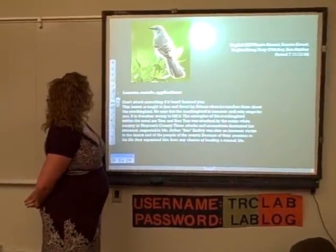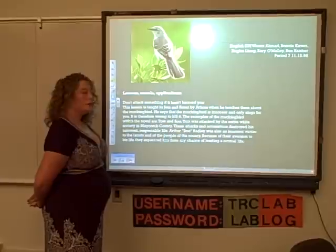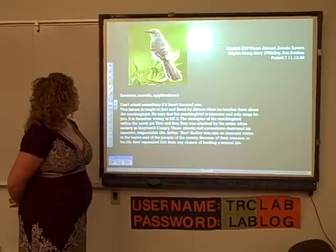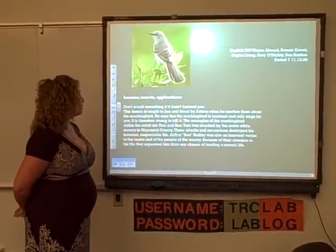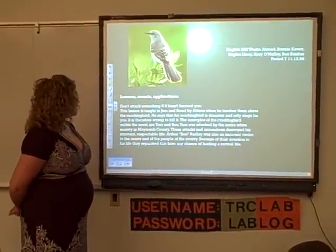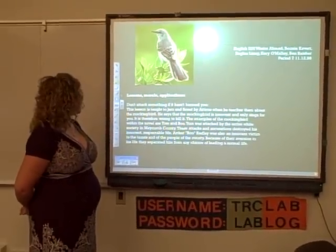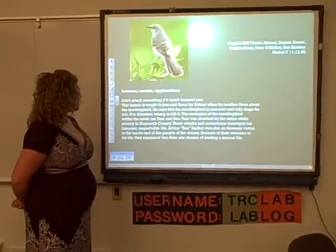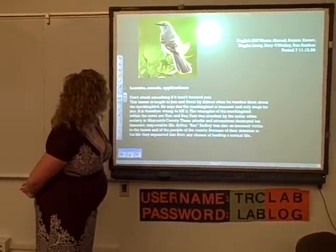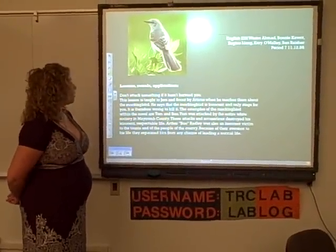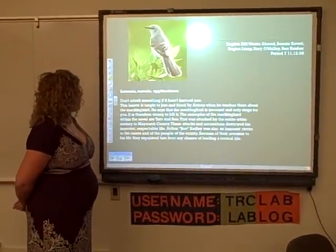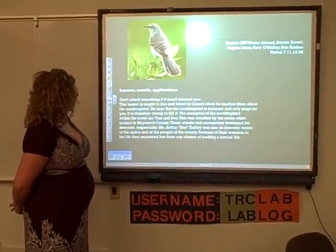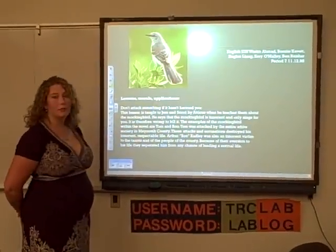One of the lessons or themes that pertains to this story is: don't attack something if it hasn't harmed you. This lesson is taught to Jem and Scout by Atticus when he teaches them about the Mockingbird — he says the Mockingbird is innocent and only sings for you, so it is therefore wrong to kill it. The examples of the Mockingbird within the novel are Tom and Boo. Tom was attacked by the entire white society in Maycomb County, and these attacks and accusations destroyed his innocent, respectable life. Arthur Boo Bradley was also an innocent victim to the taunts of the people of the county, and because of their aversion to his life, they separated him from any chance of leading a normal life.